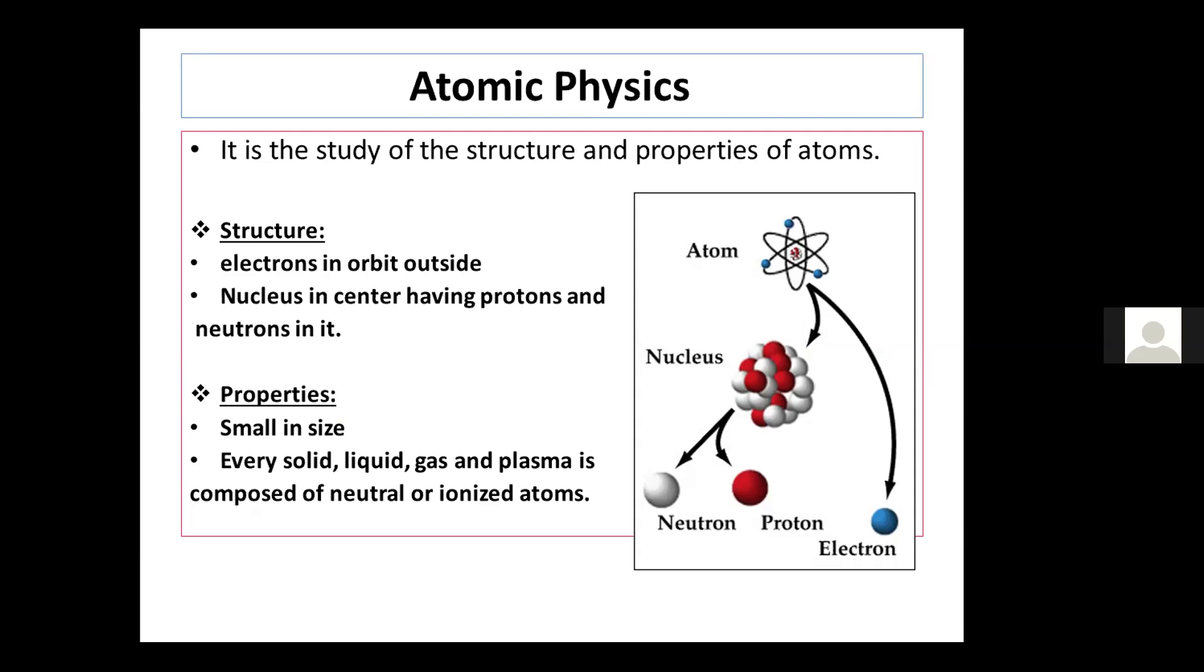Properties of atoms. They are the smallest particle of matter. Every solid, liquid, gas and plasma is composed of neutral or ionized atoms. They are small, around 1 into 10 to the power minus 10 meter in size.